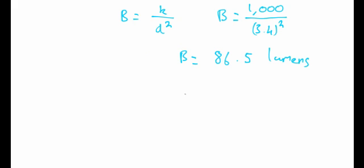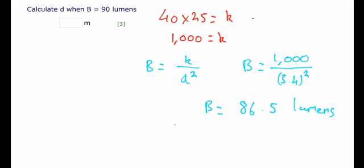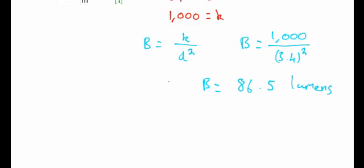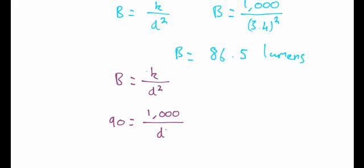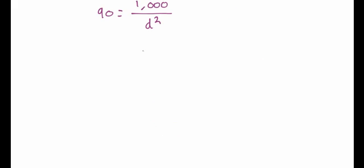Now let's look at the second part. The second part asks us to calculate d when b is 90 lumens. It's the same process, but we know b instead of d this time. From our original equation: b equals k, which is 1,000, over d squared. This time we're given b — b is 90. So: 90 equals 1,000 divided by d squared. To get d on its own, we need to multiply across by d squared and then divide across by 90, or just put 1,000 over 90 to get d squared on its own.